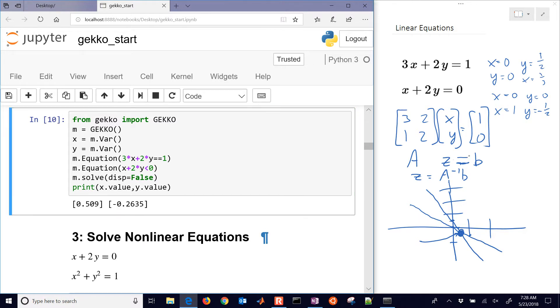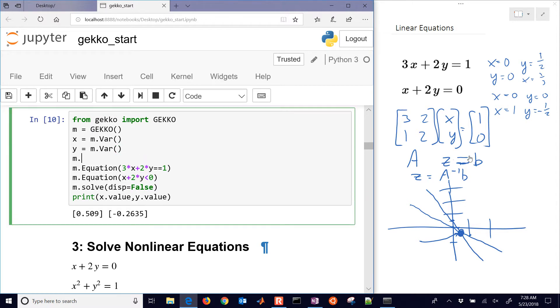Often you need, if you give up a degree of freedom with an inequality constraint, you need to have an objective. So I'll just try x squared. I'm going to minimize x squared. And it comes back to the original solution that we had before.